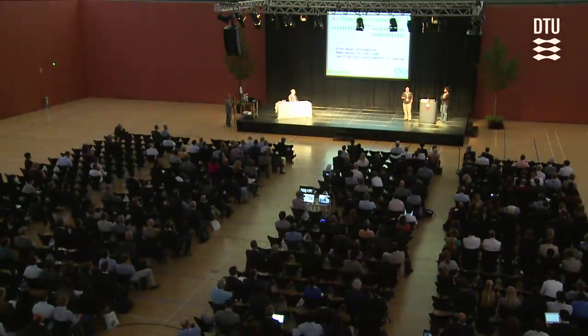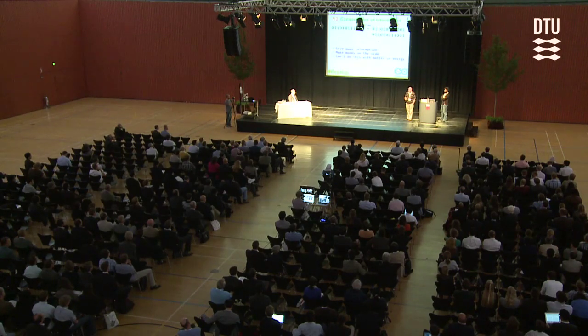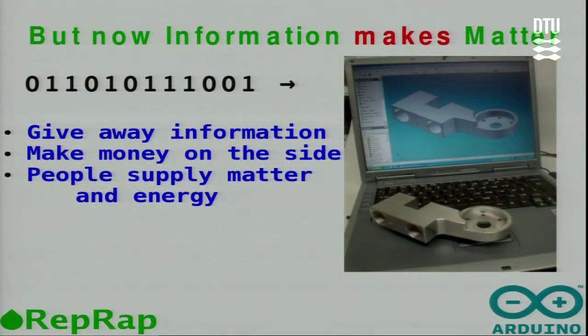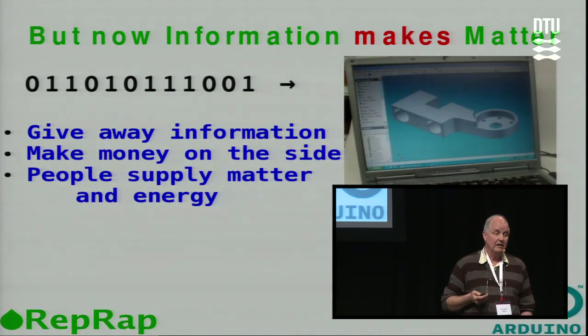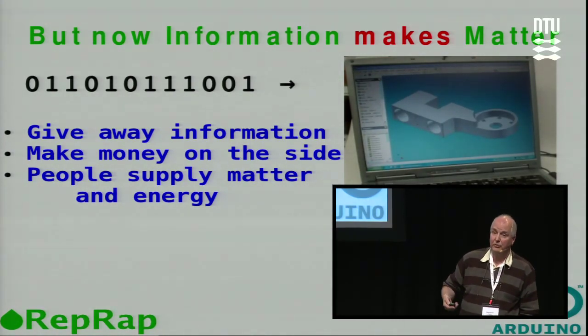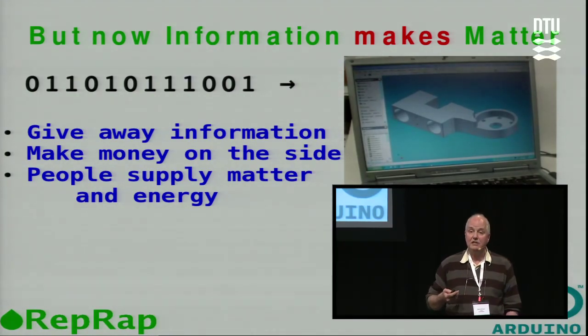You can't do this with matter and energy, because when you give some matter or energy away, you haven't got it anymore. If I have five apples and I give you two, I've only got three left. But if I have five bits of information and I give you a copy, I've still got the five bits. Now, information can make matter — that stream of ones and noughts is a CAD design, and when we've got that CAD design, we can use it to make a real physical object. So we have a mechanism for giving away information, possibly making money on the side, and having end users — possibly even private individuals — supply the matter and energy needed to turn that information into useful wealth.